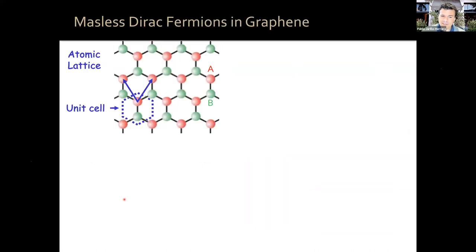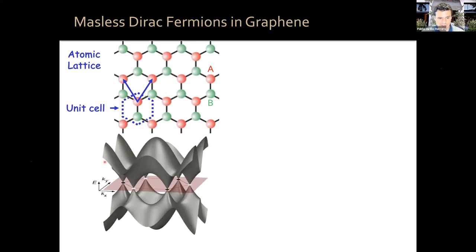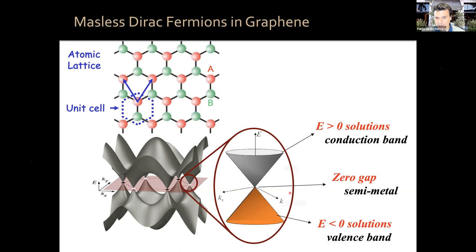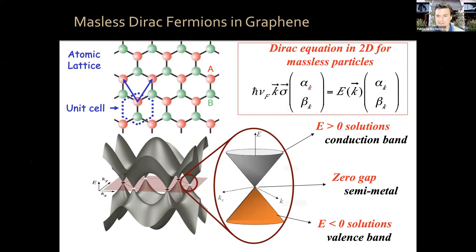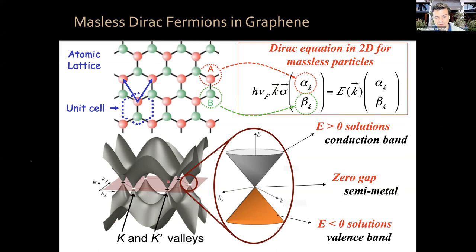Graphene is a honeycomb of carbon atoms. All the atoms are chemically identical — they're all carbon — but in order to tile a honeycomb, you need a two-atom basis in addition to two unit vectors. These two atoms are called the A and B sub-lattices. Doing a simple tight-binding calculation of the electronic structure gives you, near the Fermi energy, unusual conical dispersions where energy is linear in momentum. This can be written as a Dirac equation in 2D for massless particles, where instead of a usual spinor for spin up or down, you have a pseudo-spinor telling you whether the electron is on the A or B sub-lattice. There are also two inequivalent valleys, K and K prime. So electrons in graphene have a fourfold degeneracy: spin up, spin down, valley K, valley K prime — remember the number four, it will appear later.